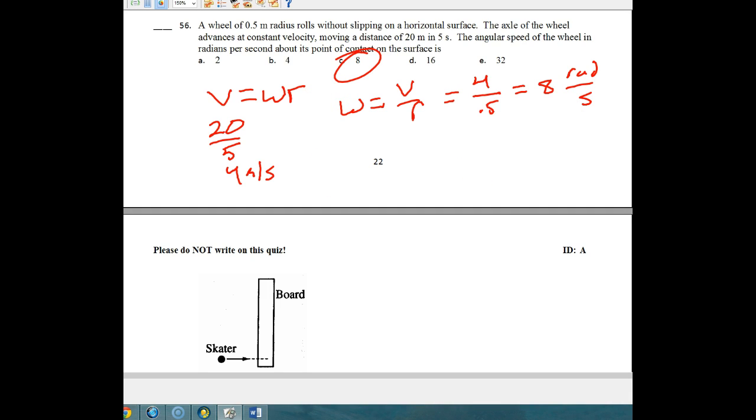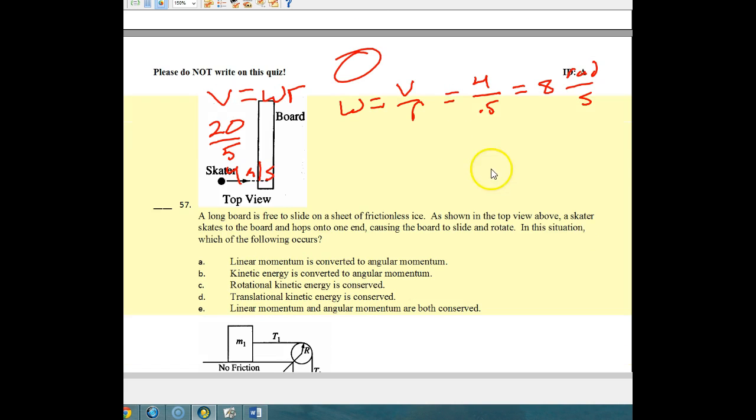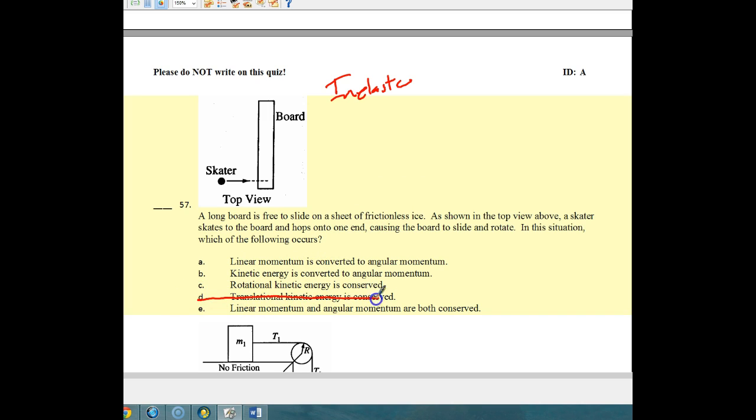Number 57 is our next question. For number 57, we've got a skater. And the skater is going to run into the board here. This is all happening on a sheet of frictionless ice. As shown in the top view, the skater skates to the board and hops onto one end, causing the board to slide and rotate. So we know that this is some sort of inelastic collision. And for this one, we know kinetic energy has got to be lost, which rules out letter D. So we don't have to worry about it anymore.